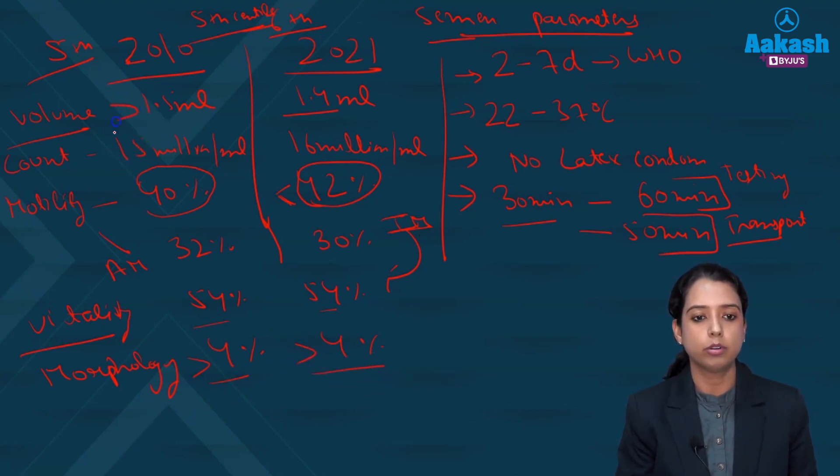Volume should be more than 1.5 it was but now it should be more than 1.4. Count should be more than 16 million per ml. Then motility should be more than 42 percent. Actively motile should be more than 30 percent. Vitality should be more than 54 percent and morphology should be more than 4 percent. This is the fifth centile range.